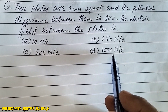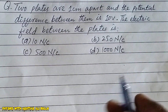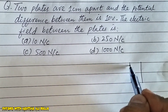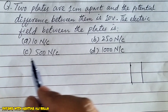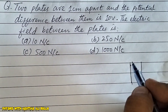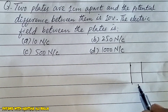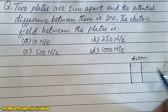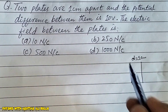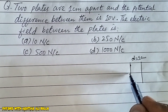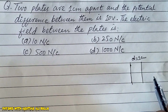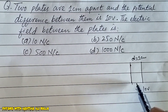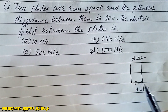d) 1000 Newton per coulomb. There are two plates which are separated by one centimeter, meaning the separation between the plates is one centimeter, and the electric potential is applied as 10 volts, so V equals 10 volts. We have to find the electric field between the plates.